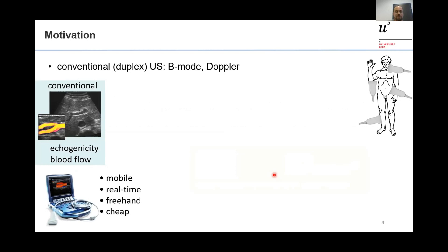I would like to give a short motivation for speed of sound imaging using echo ultrasound. Classical ultrasound imaging is mostly a combination of a grayscale image showing anatomy based on echo intensity, and Doppler flow imaging for monitoring blood flow. The big advantage of ultrasound is that it is mobile, real-time, freehand, cheap, and does not use ionizing radiation. However, it has quite low specificity for many disease types, because a grayscale image alone makes it difficult to differentiate between different disease types.